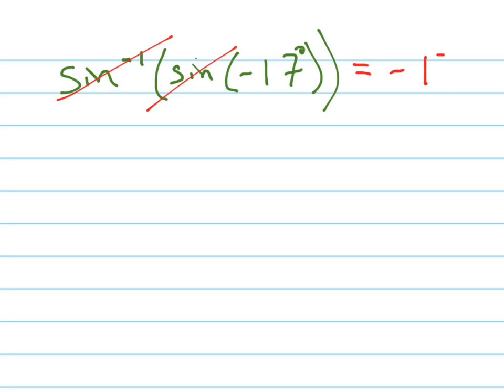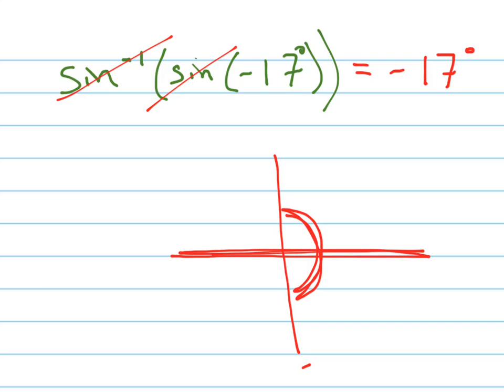The answer is yes, I can. Why can I cancel those signs out? Oh yeah, because negative 17 is in the range of the sine. That's right, because the range of the sine inverse function is between negative 90 and positive 90 degrees. So I can just cancel those out, because negative 17 is in the range. All right.